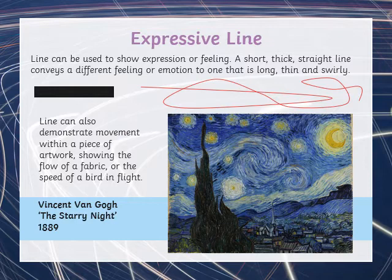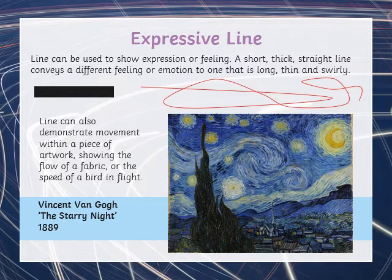Line can also demonstrate movement within a piece of artwork. This is one of my favourite paintings, The Starry Night by Vincent van Gogh. I love the way that van Gogh has used short strokes — short lines — close together, and has almost made it look like the clouds are swirling in the sky. Just using line to show the flow of the picture.